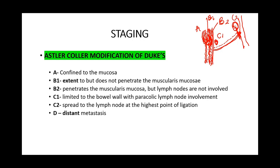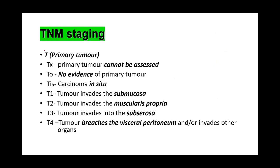D is when there is distant metastasis. You can see how the staging of this tumor improved from Duke to modified Duke, to the Astler-Coller modification, then to the TNM staging, where T represents the primary tumor, N represents the lymph nodes, and M represents metastasis.